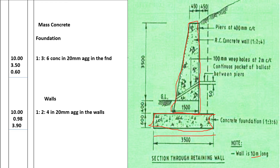So 900mm is our overall depth. To get the width we take the average: 1500 plus 450 equals 1950, divided by 2 gives us 950mm. So the length is 10.00m, the average width is 0.95m, and the depth is 3.90m. The concrete mix specified for the wall is 1:2:4 in 20mm aggregate.